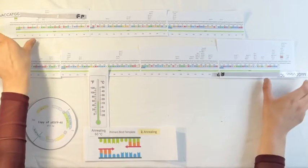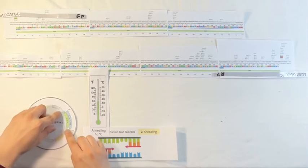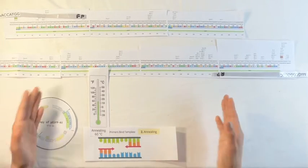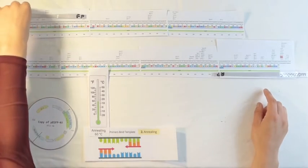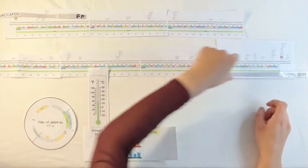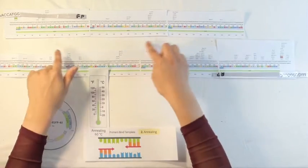These primers are going to flank the EGFP gene at both sites. The reason we want them to flank the EGFP gene is so that we can only amplify everything between the segments, and therefore only amplify the EGFP gene.